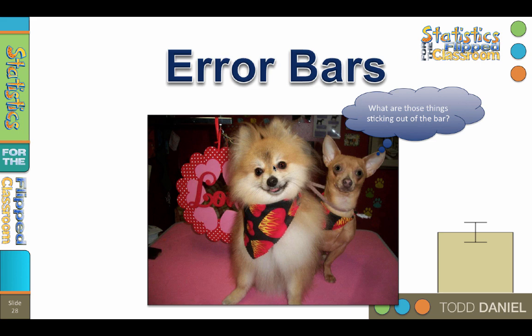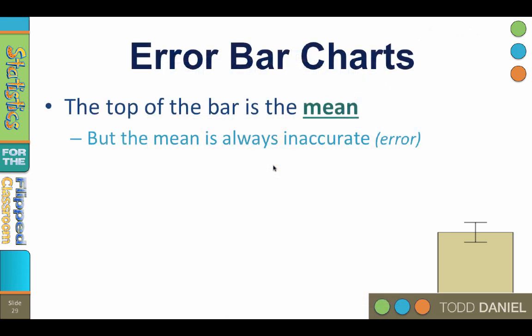The top of that big yellow bar usually represents the mean score for that variable. Now the mean is the best estimate, the most representative score. The mean is very precise, but we cannot be confident that it is exactly right. In fact, we're pretty sure that it will always be off a little, and we need to know how much.